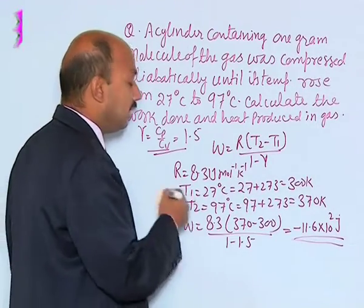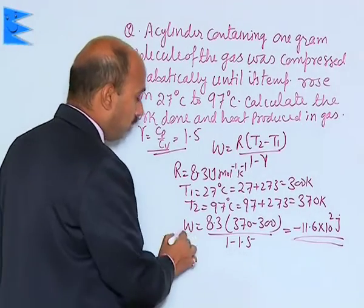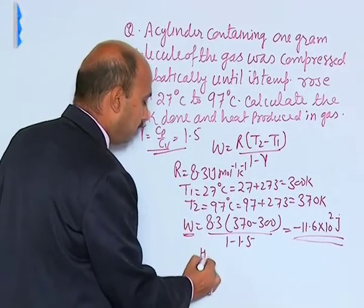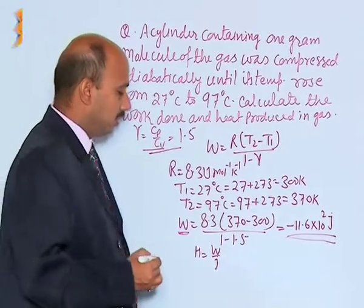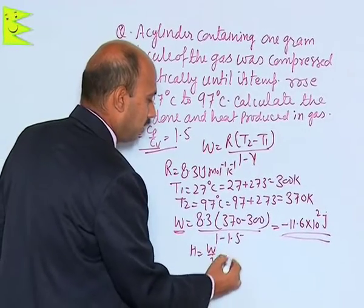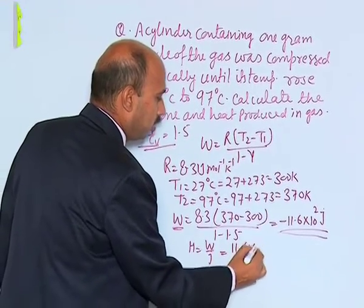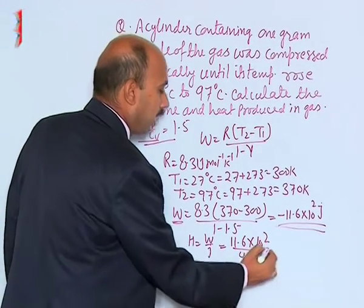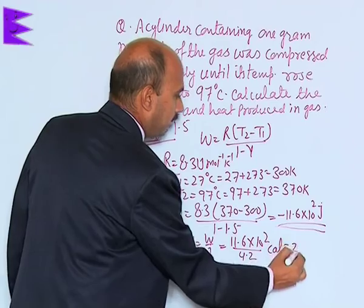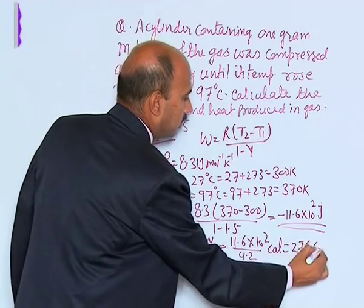Now, we have to calculate heat produced. So you know the work is this much, so we can write heat produced W by J where J is a conversion factor here. So we can write here 11.6 into 10 raised to power 2 divided by 4.2 calorie, that is coming here 276.6 calorie.